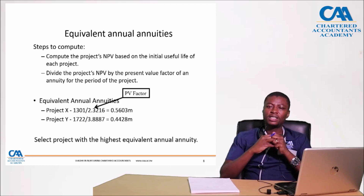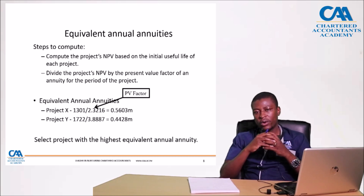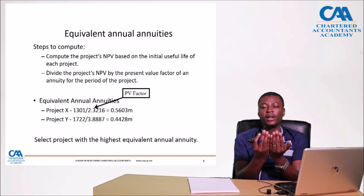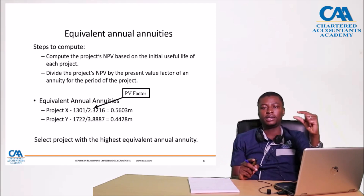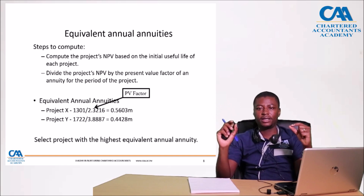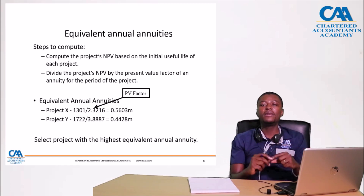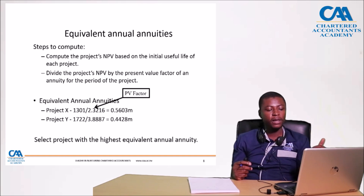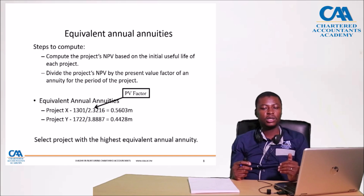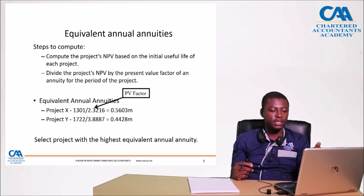You may ask: what is the present value factor? Most of us are using financial calculators when we do present value calculations, but the underlying principle is the PV annuity factor. Before we had these calculators, we used present value tables. For example, discounting at 10% — in year 4, what is the present value factor? For a 5-year project, what is the present value factor? From an examination perspective, when you are required to use this method, you will be given the relevant present value factors. The final step is calculating the Equivalent Annual Annuity: you take the NPV calculated and divide it by the project's present value annuity factor. For a 3-year project the PV factor is 2.3216, and for the 6-year project the PV factor is 3.887.